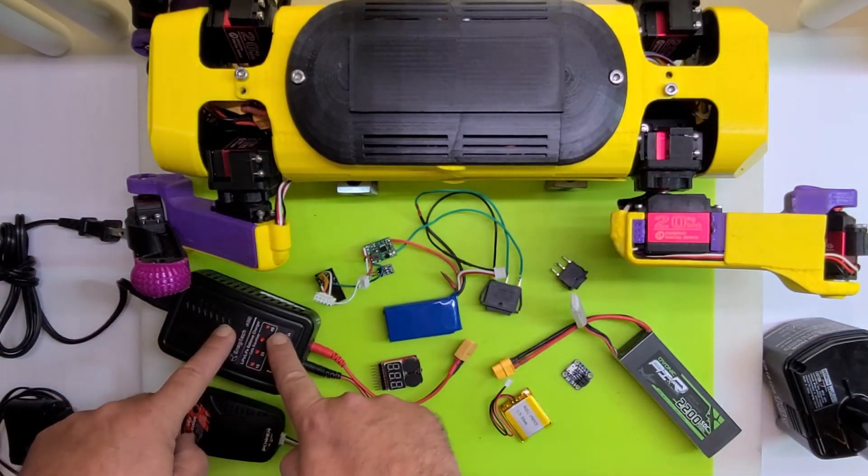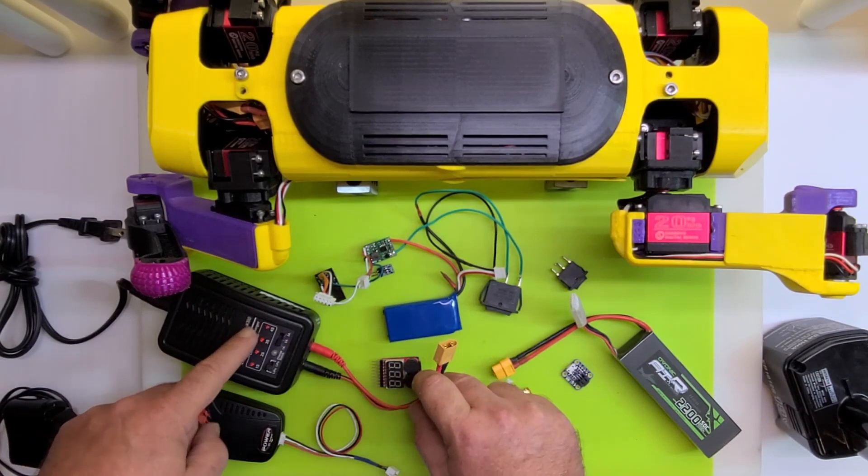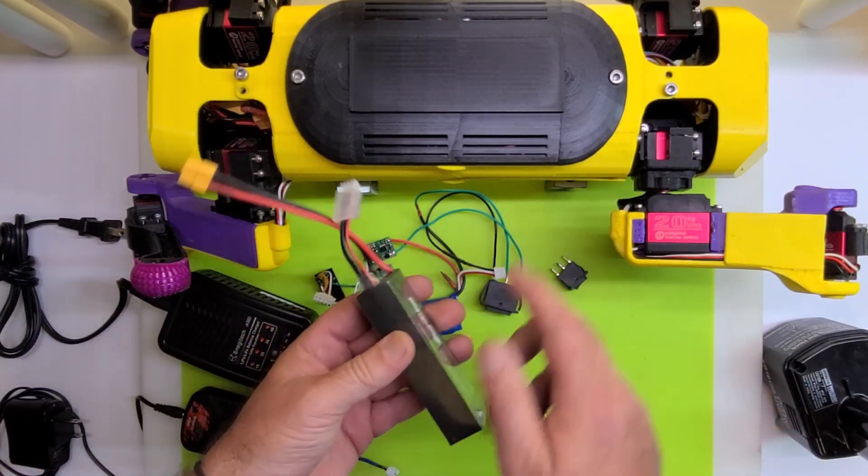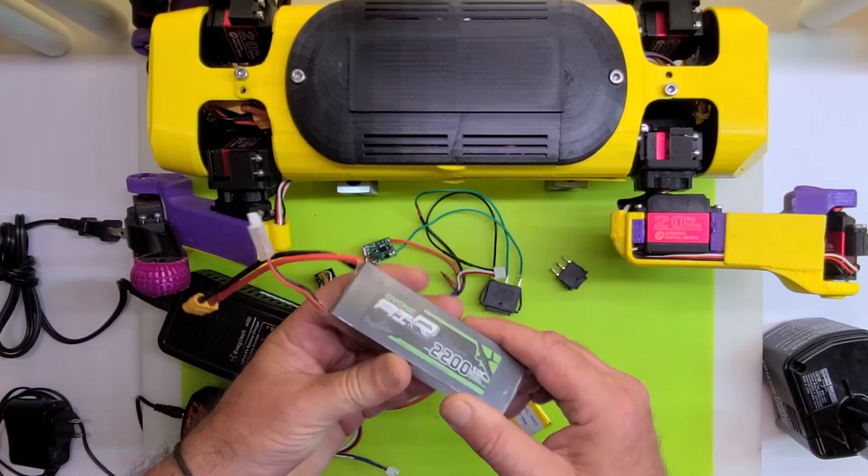In this case this big charger, connect it up and let the charger handle charging that battery. Because this is the same type of battery we use in Nova, which is a three cell battery, which means it has three separate batteries in here, all wired together.